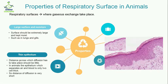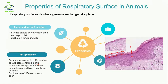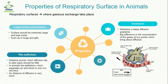The second property is thin epithelium. The distance across which diffusion has to take place should be very small. In animals, the epithelium which separates air and blood is only two cells thick. Here you can see how thin the epithelium is — diffusion can easily occur across these two layers. Because of this, the distance of diffusion is very short.